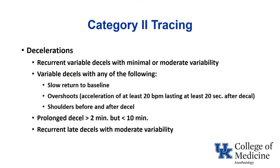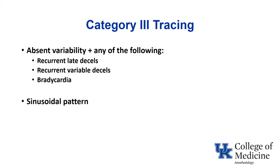Recurrent late decels with moderate variability are still category two — that's why if someone has recurrent late decels but good variability, they'll hold off because variability is probably the best indicator of fetal well-being. Category three is when you have absent variability combined with any of the following: recurrent lates, recurrent variables, or bradycardia. That is very predictive of fetal hypoxia acidosis and they'll move quickly to deliver. The other category three tracing is a sinusoidal pattern, which you don't see very often, but if you see it, that is category three as well.